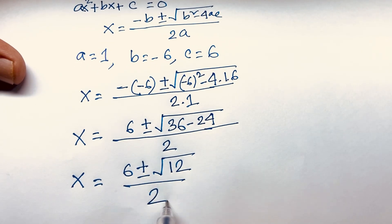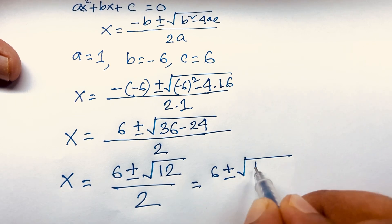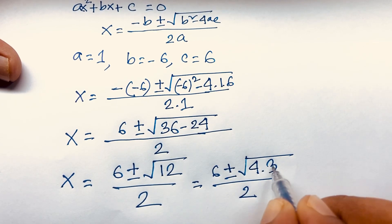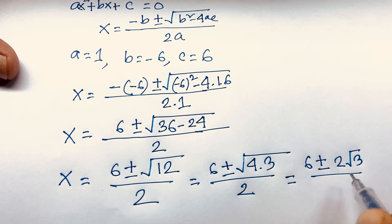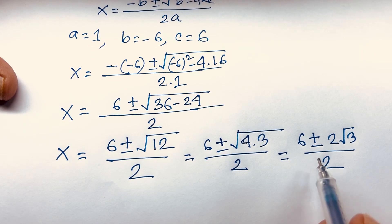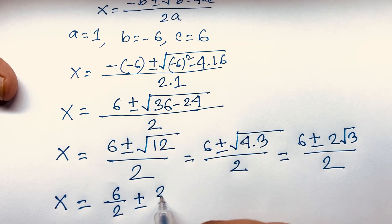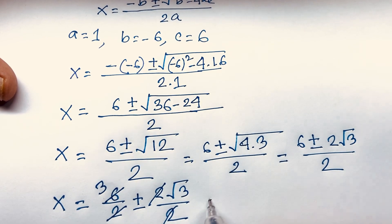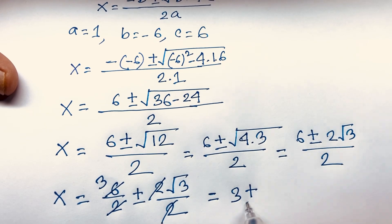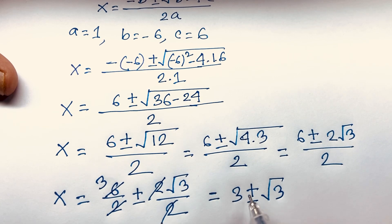Simplifying: 36 minus 24 equals 12, so x equals 6 plus or minus square root of 12 over 2. Since 12 equals 4 times 3, the square root of 12 equals 2 root 3. So x equals (6 plus or minus 2 root 3) over 2, which simplifies to x equals 3 plus or minus square root 3.